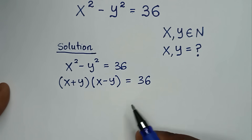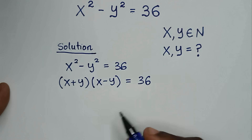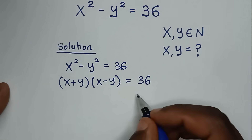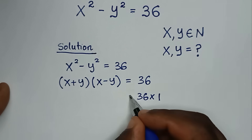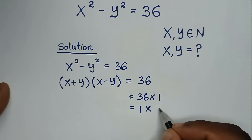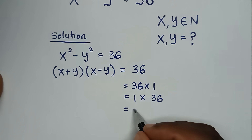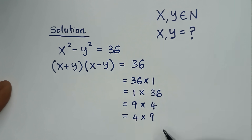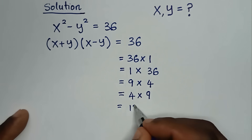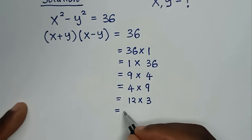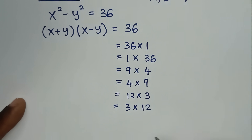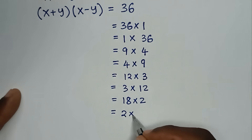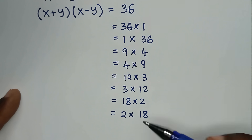Here, 36 is the product of (x plus y) times (x minus y). So 36 gives us selections or choices: 36 is 36 times 1, or 9 times 4, or 4 times 9, or 12 times 3, or 3 times 12, or 18 times 2, or 2 times 18. We have 8 choices.